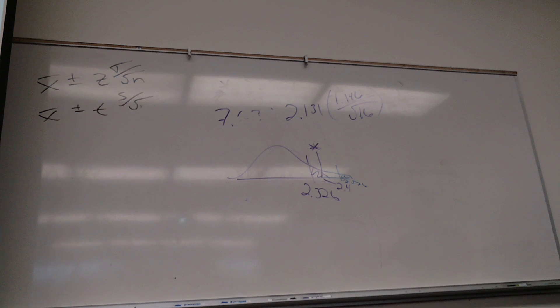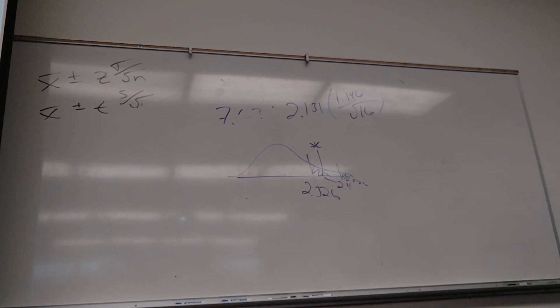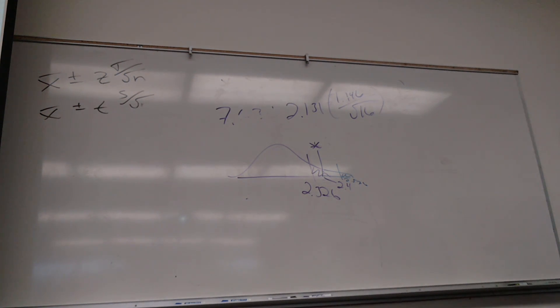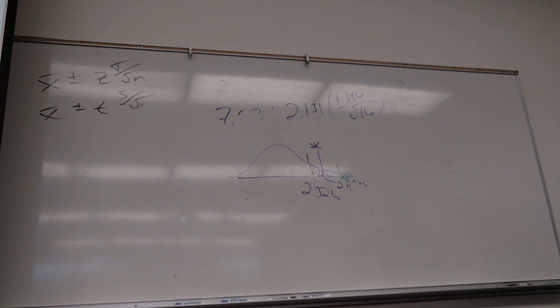Those are both bigger than 5. Which means I can use Z scores. Because it's normal enough. If either one of those came out less than 5, it's not normal.